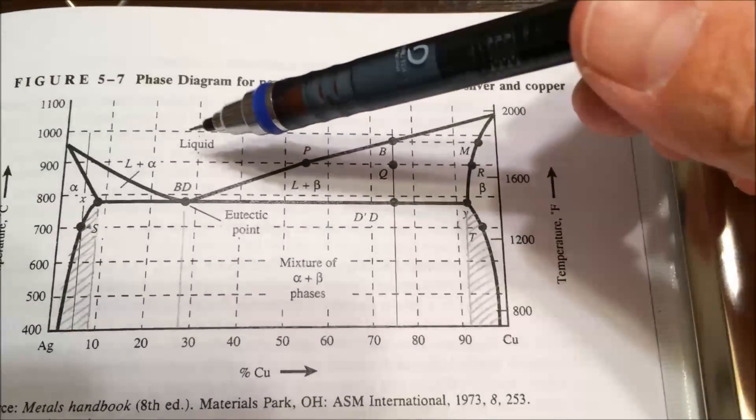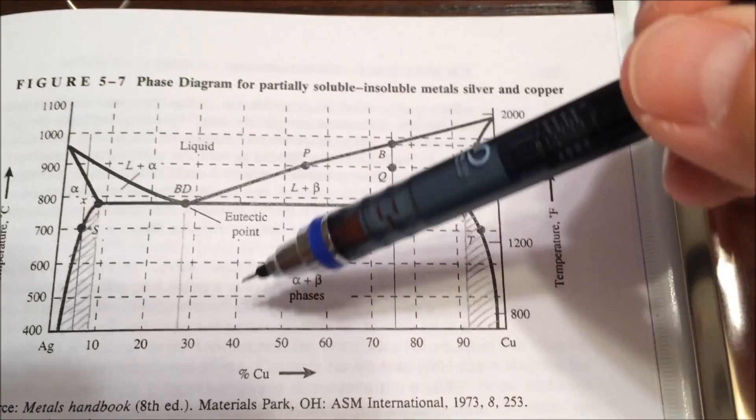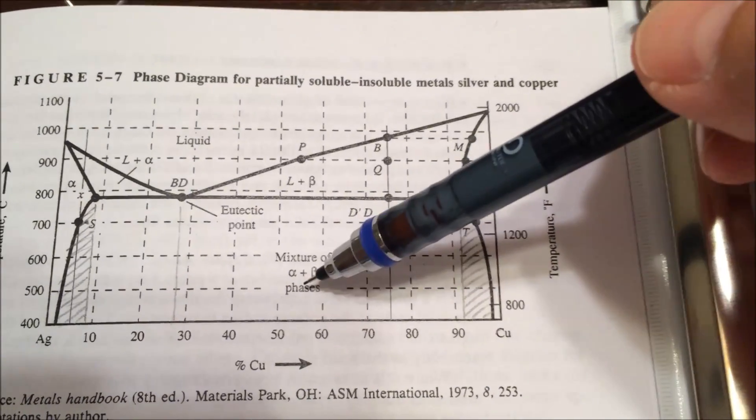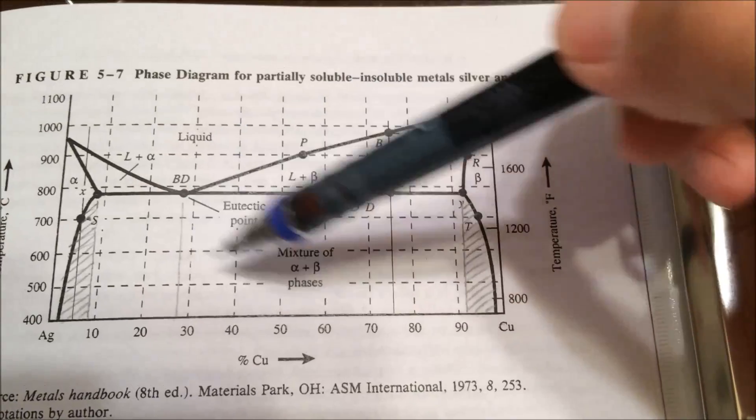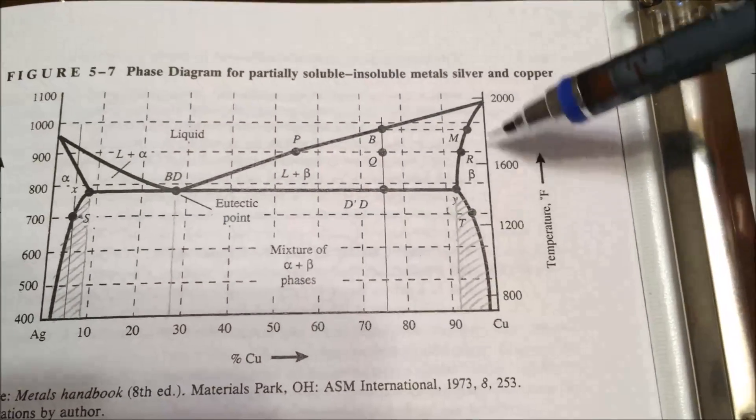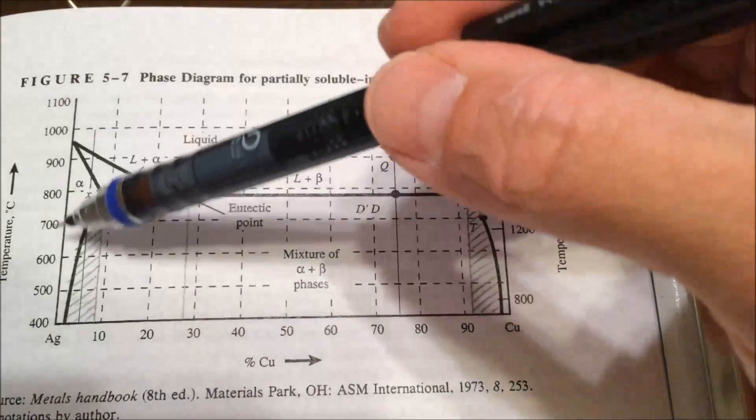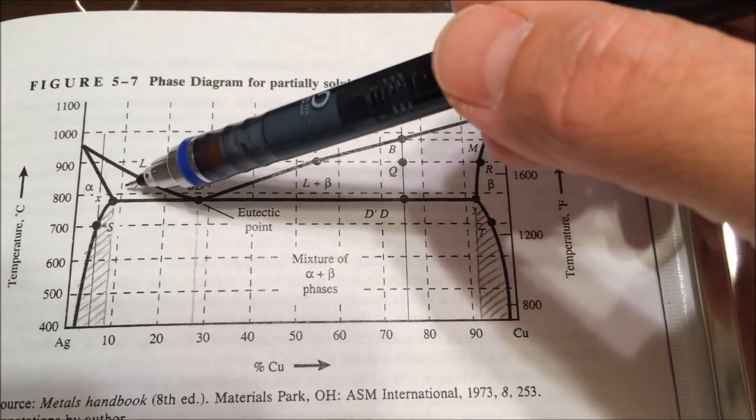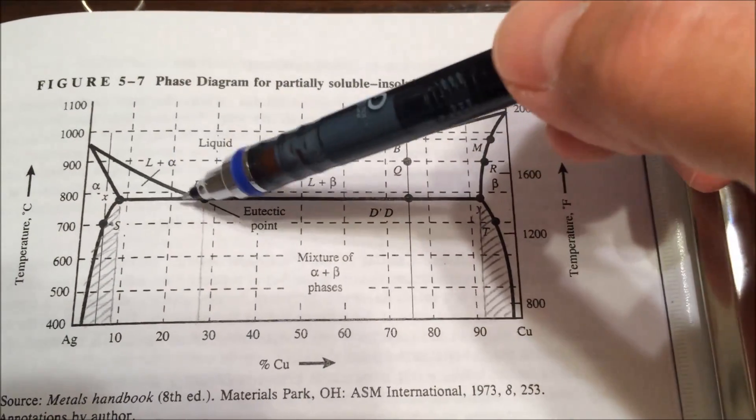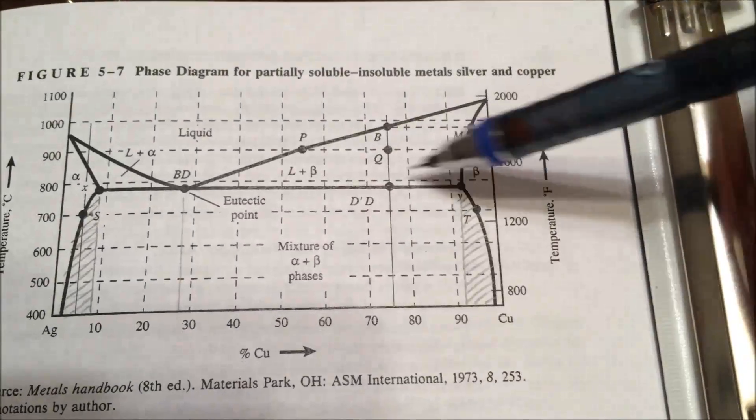Then you have different regions: a liquid region, a mixture of alpha and beta phases all down here which is a solid mixture, a beta phase here, an alpha phase here, a liquid plus alpha phase here, and a liquid plus beta phase here.